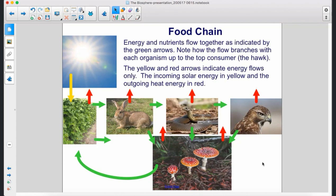Energy and nutrients flow together as indicated by the green arrows. Note how the flow branches with each organism up to the top consumer, the hawk.